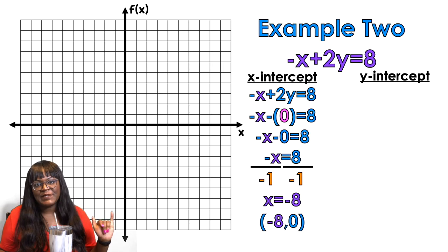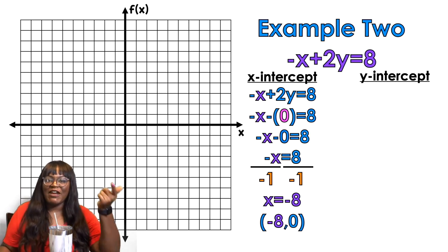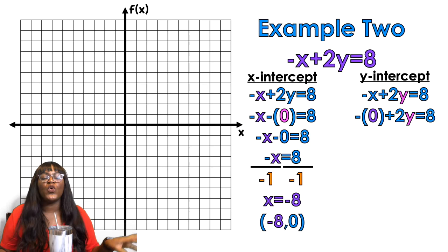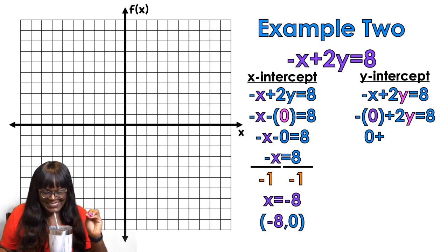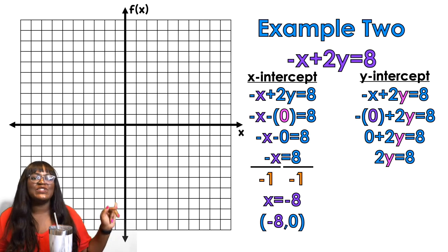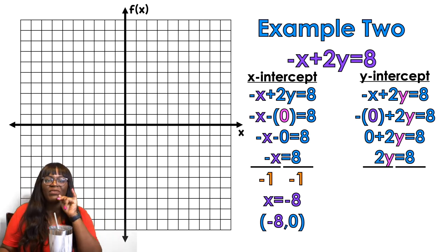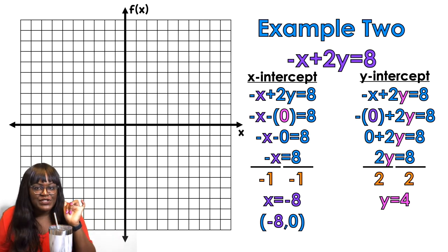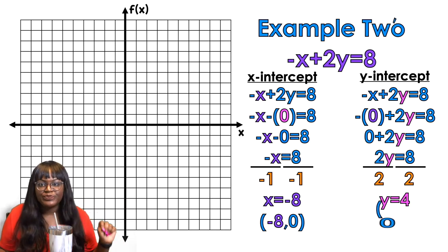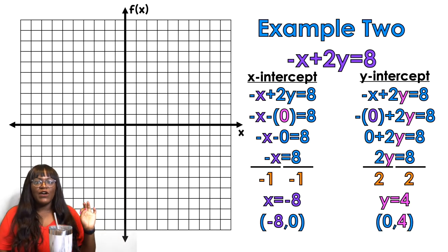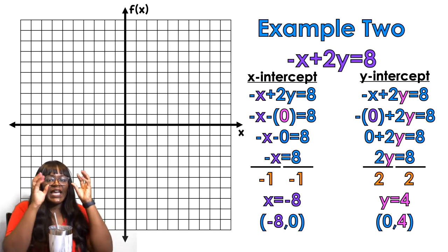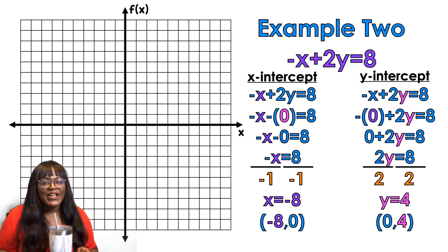For the y-intercept, plug in 0 for x. 0 times negative is 0, so 0 plus 2y is 2y. 2y equals 8 — divide by 2 — y equals 4. So (0, 4) is my y-intercept. Again, pay attention: x-intercepts look like (number, 0), y-intercepts look like (0, number).